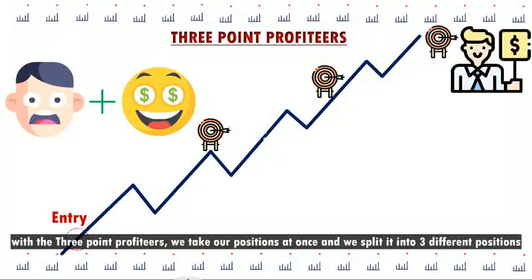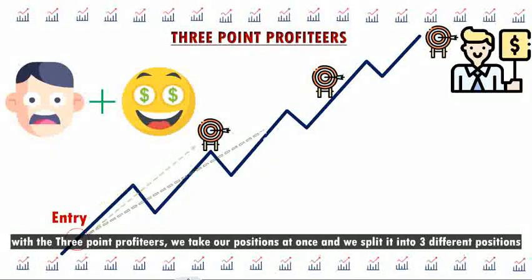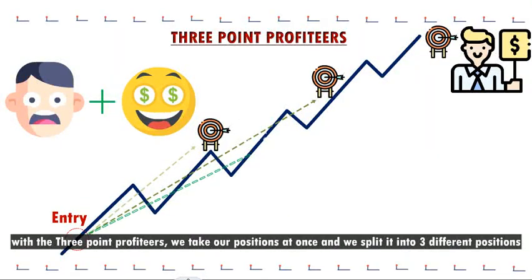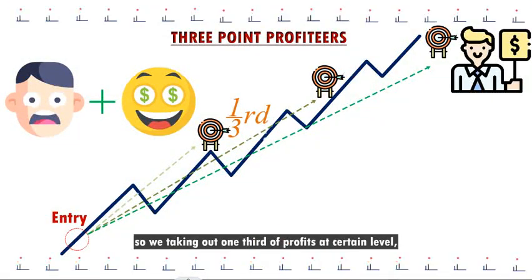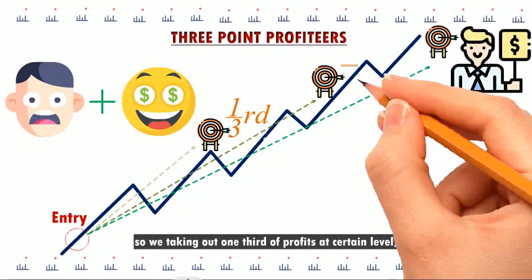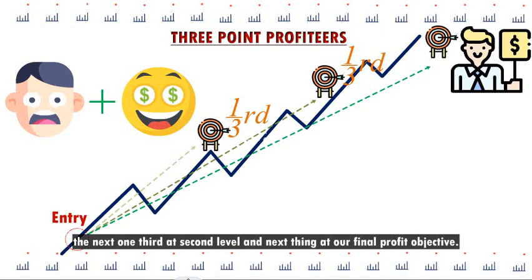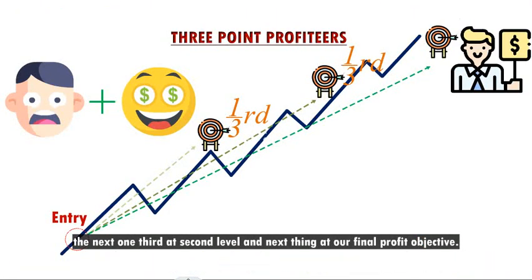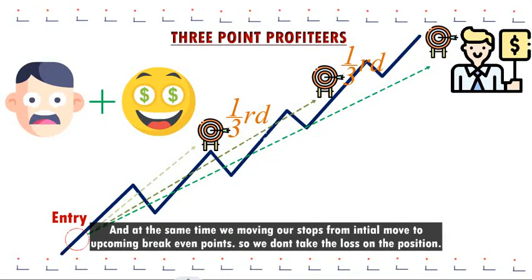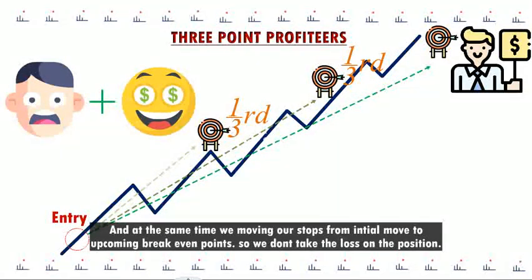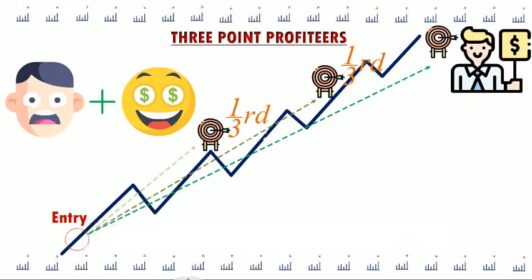With the three-point profiteers, we take our positions at once and split them into three different positions. We take out one-third of profits at a certain level, the next one-third at the second level, and the last third at our final profit objective. At the same time, we're moving our stops from the initial move to upcoming breakeven points, so we don't take a loss on the position.